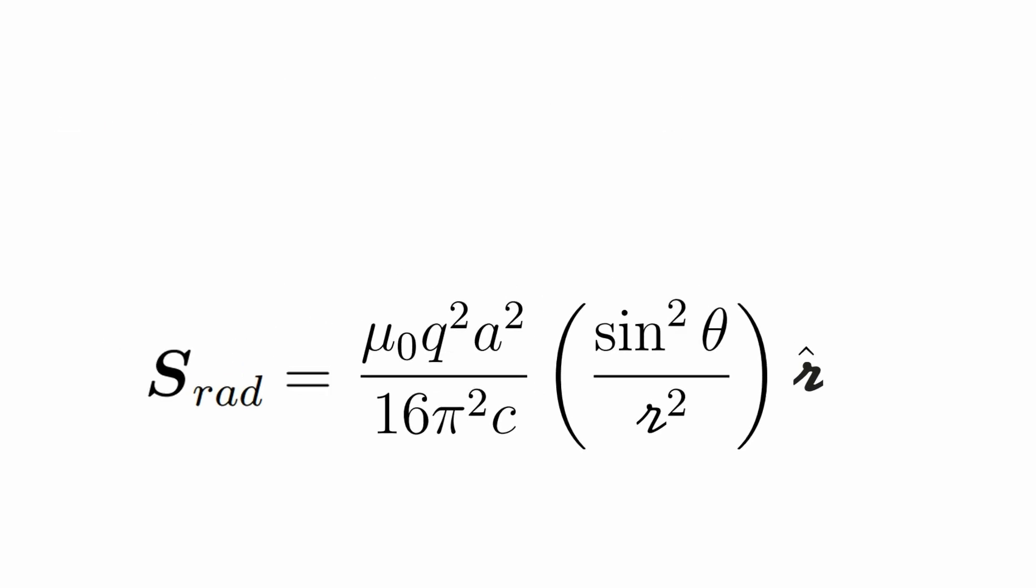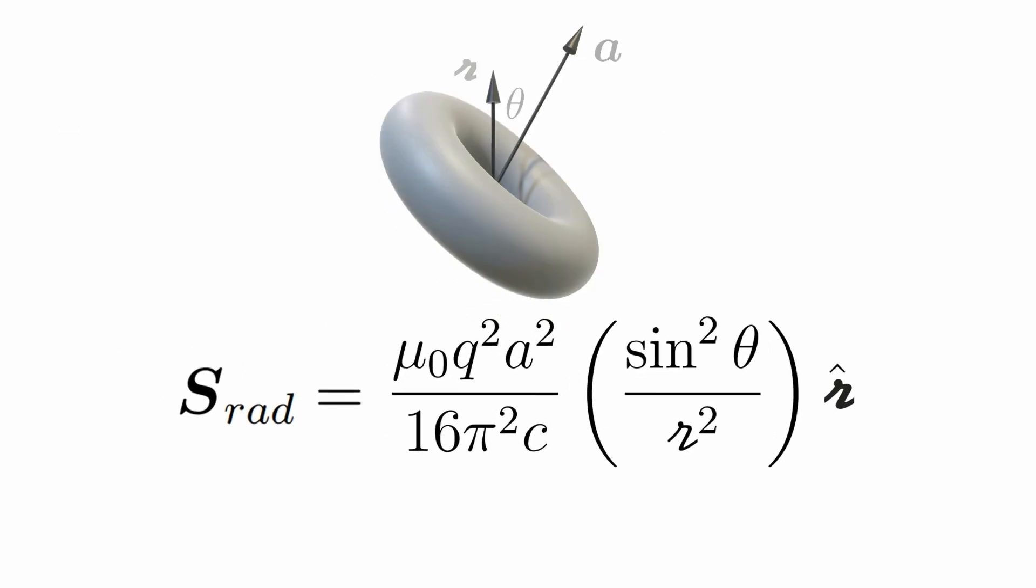When plotted in three dimensions, we get the shape of a doughnut about the direction of instantaneous acceleration, which implies that no power is radiated in the forward and backwards direction.